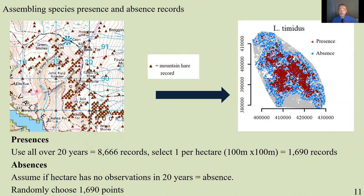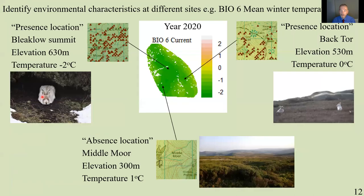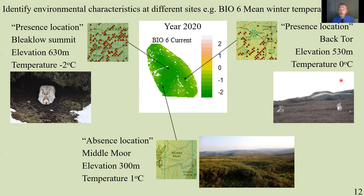For absences, we go to places such as Millbrook, where no mountain hares have been seen in 20 years, and we asked the computer to randomly select 1,690 absence locations. We then take that location data and compare it to environmental information. For the year 2020, we have a map called Bio 6 — mean winter temperature. It shows that the temperature at Bleaklow's summit at 630 metres is minus two degrees. Mountain hares occur there because they're physiologically adapted to snow — their fur turns white in winter, it insulates them, and they're camouflaged against the slope. At Back Tor at 530 metres it's also cold and there are mountain hares, but down at Middlemore it's warmer and there are no mountain hares.